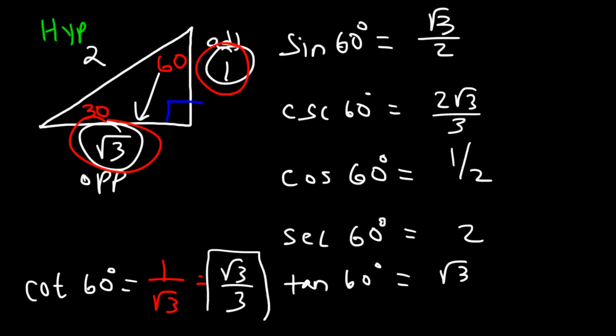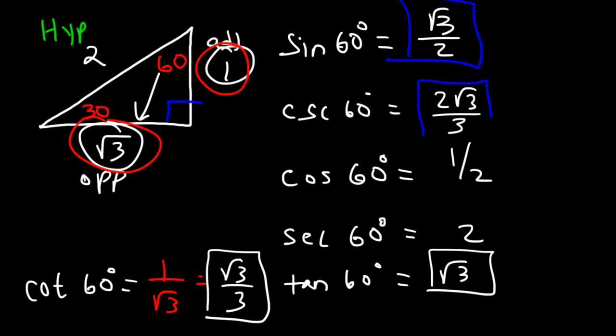After a while, you'll see some familiar answers. You won't need to memorize the unit circle anymore — you can use these special right triangles to evaluate common angles like 30, 45, and 60.